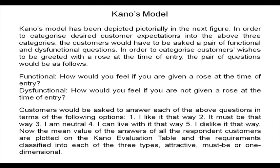The Kano's model has been depicted pictorially in the next figure. In order to categorize desired customer expectations into the above three categories, customers would have to answer a pair of functional and dysfunctional questions. For example, to categorize the wish to be greeted with a rose at entry, the functional question would be: 'How would you feel if you are given a rose at the time of entry?' Customers answer each question using options: 1) I like it that way, 2) It must be that way, 3) I am neutral, 4) I can live with it that way, 5) I dislike it that way. The mean values are plotted on the Kano evaluation table and requirements are classified into attractive, must-be, or one-dimensional.